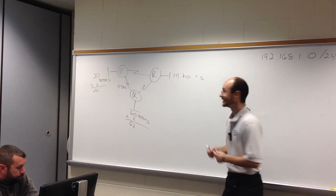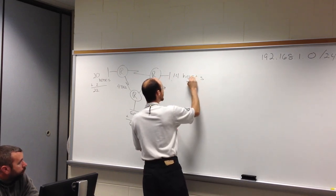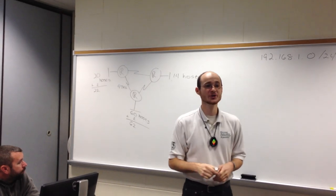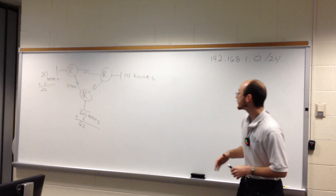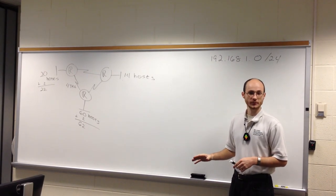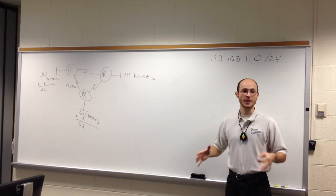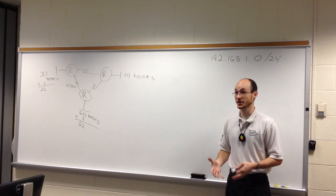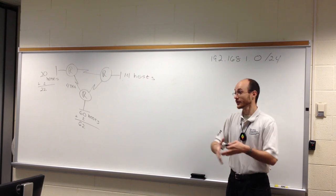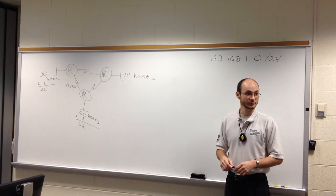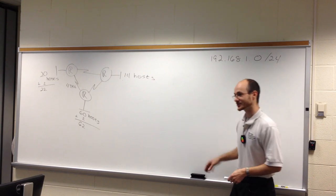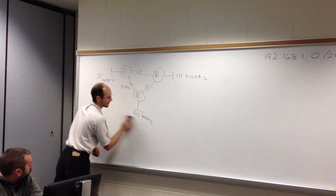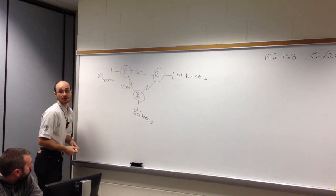With VLSM, just like before, we find our largest host — but we can't stop there. The largest host cannot be the cookie cutter for every subnet. We need to vary the size of the cookie cutter so we can fit more subnets. Think of it like varying the size of cookie cutters to fit more cookies on the sheet.